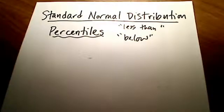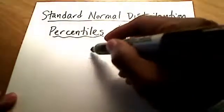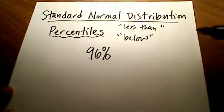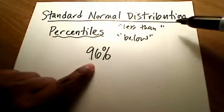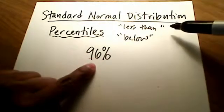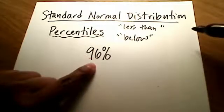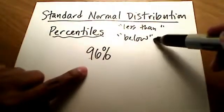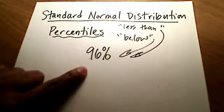If you are told that you scored, maybe on a standardized test like the SAT or the ACT, your IQ score, whatever it might be, that you are in the 96th percentile, what does that mean? That means that 96% of the people who took that test, or 96% of the people in the entire distribution, is below your score, is less than your score.